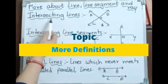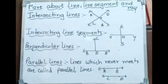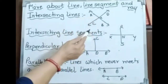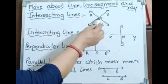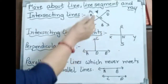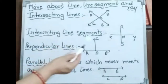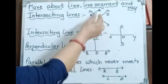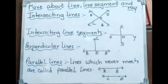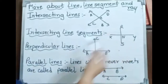More about line, line segment, and ray. Intersecting lines: AB and CD are two lines. Whenever two lines cross each other at a point, that is called intersecting lines. AB and CD cross each other at point X — so these are intersecting lines. Similarly, intersecting line segments: line segments RS and XY cross each other at point N — this is an intersecting line segment.